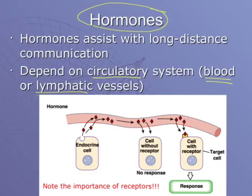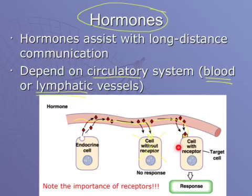Hormones travel through either the blood vessels or the lymphatic vessels. Endocrine cells produce hormones, and those hormones get released along the way as they travel through those vessels. When a hormone reaches a cell with no receptor for it, nothing happens. But when it reaches cells that do have the right receptor, that triggers a response. So receptors are really important — while local communication is cell-to-cell directly, hormones travel throughout your body but only elicit a response in cells that have the matching receptors. That's cell communication in a nutshell.